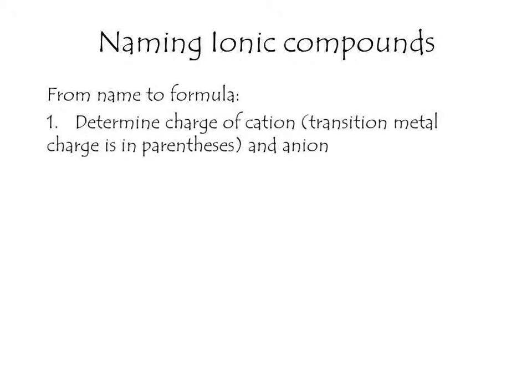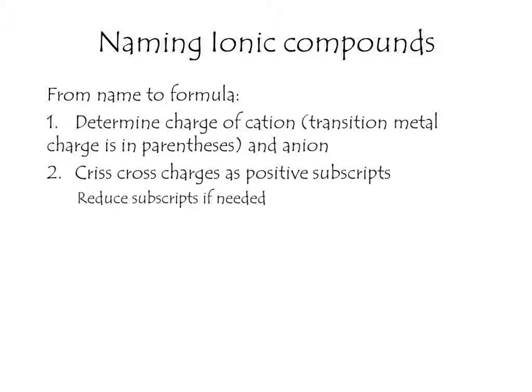First, you need to determine the charge of the cation. That's simple for a transition metal because the charge is the Roman numeral in the parentheses. Then find the charge on the anion. Once you have both charges, do the crisscross and bring it down to its empirical formula.